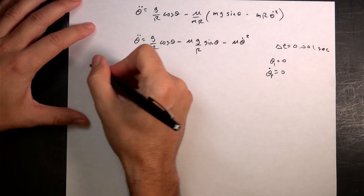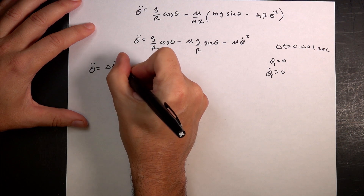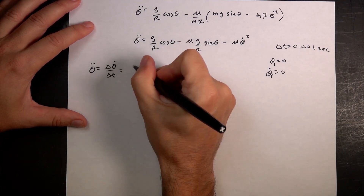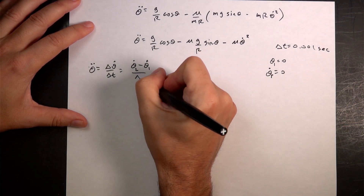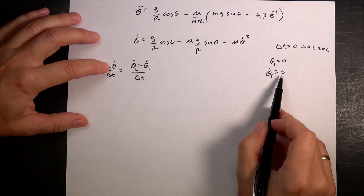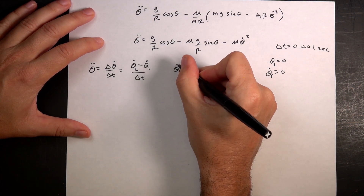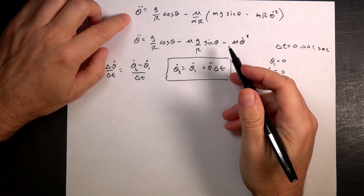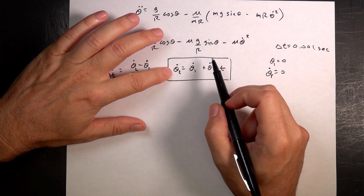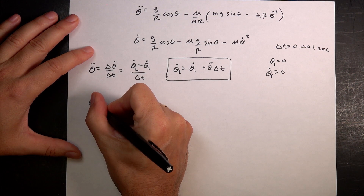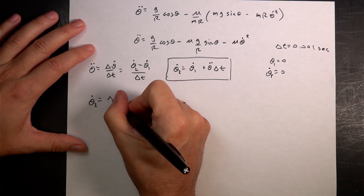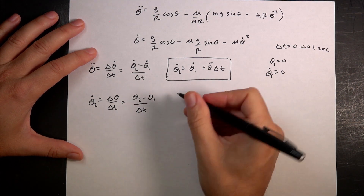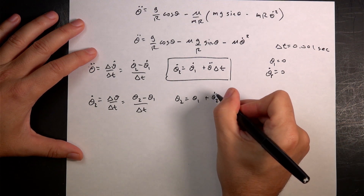If I assume theta-double-dot is constant, I can say theta-double-dot is delta theta-dot over delta t. So that's going to be theta-dot_2 minus theta-dot_1 over delta t. I know theta-dot_1 is zero, so I can solve this for theta-dot_2: theta-dot_2 equals theta-dot_1 plus theta-double-dot times delta t. Then I can use that velocity to find theta_2: theta-dot_2 equals delta theta over delta t, which gives theta_2 equals theta_1 plus theta-dot_2 times delta t.